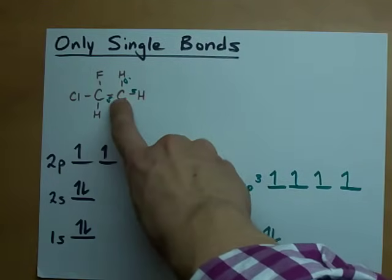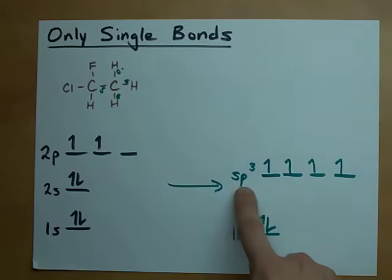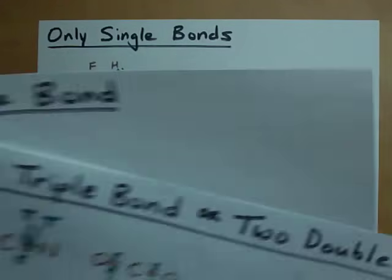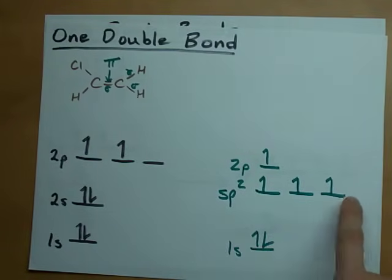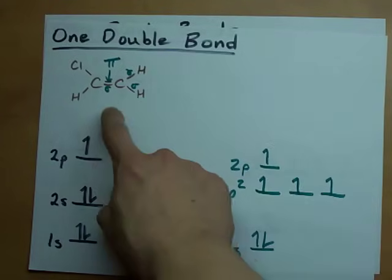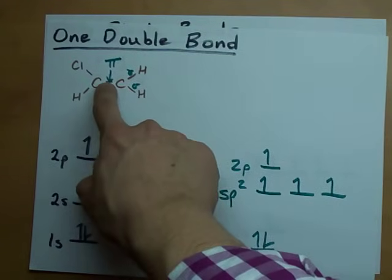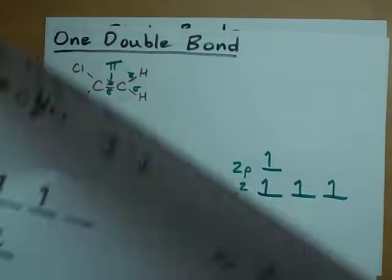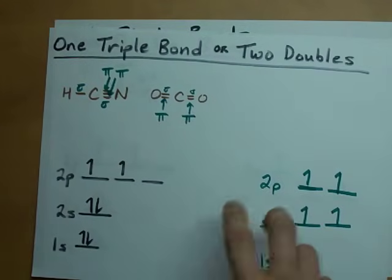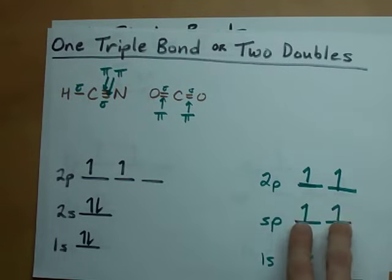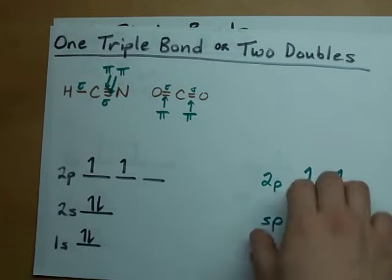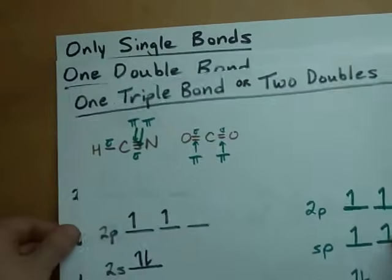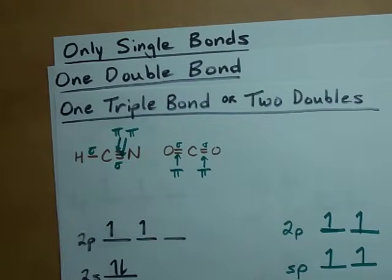When a carbon has only single bonds, they're all sigmas and you need four sp3 hybrid orbitals to do it. When you have a double bond, you need three sp2 hybrid orbitals for the three single bonds and one p orbital left over for the double bond or pi bond. Finally, for the triple bond, you need two sp hybrid orbitals for the sigma bonds and you need two left over p orbitals for the two pi bonds. It's all here. Ain't no fictions. Best of luck.